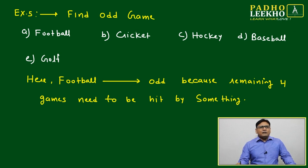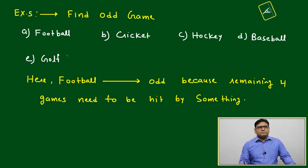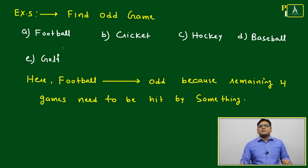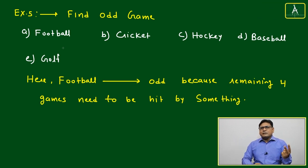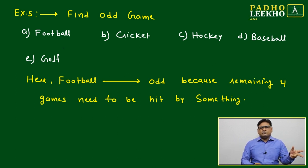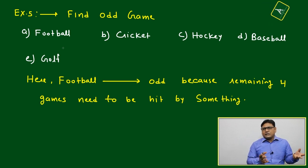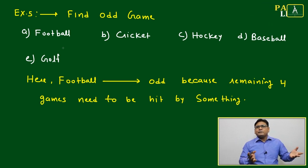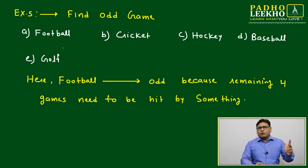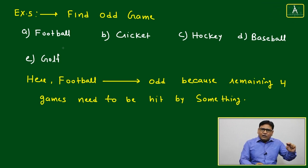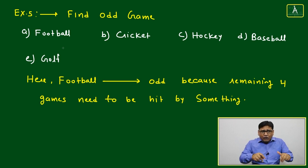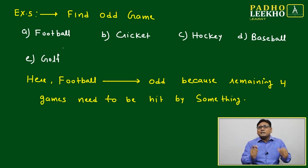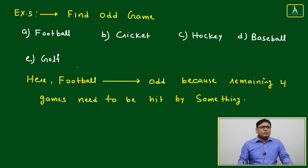In an MBA-level 'find the odd one out' test, when a few types of games are given, the first classification is indoor game versus outdoor game. This is common sense — no graduation degree needed. If all games given are indoor, there's some commonality; if all are outdoor, there's another commonality. We look at what that commonality is.